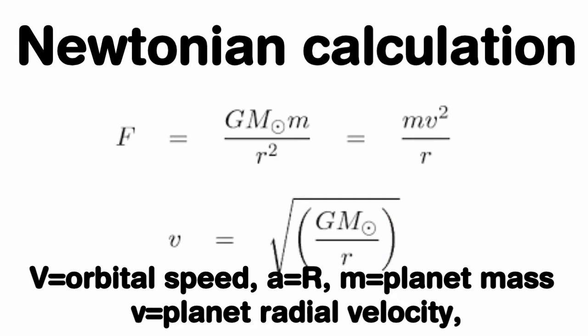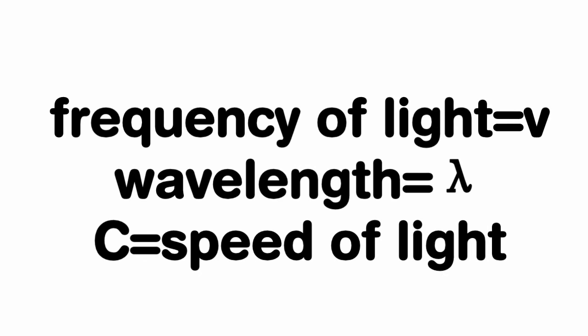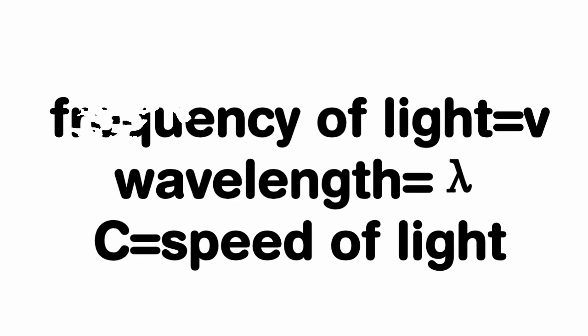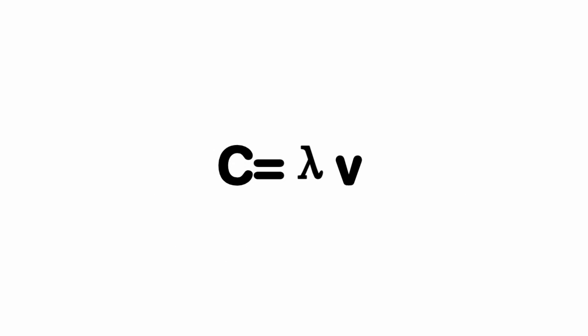Once we know the A, we use the Newtonian calculation to get the speed of the planets. In the Newtonian calculations equation, the R here is the same as the semi-major axis A. The next step is to calculate the observed frequency of the light. The frequency could be got by using this equation, by knowing the observed wavelength.